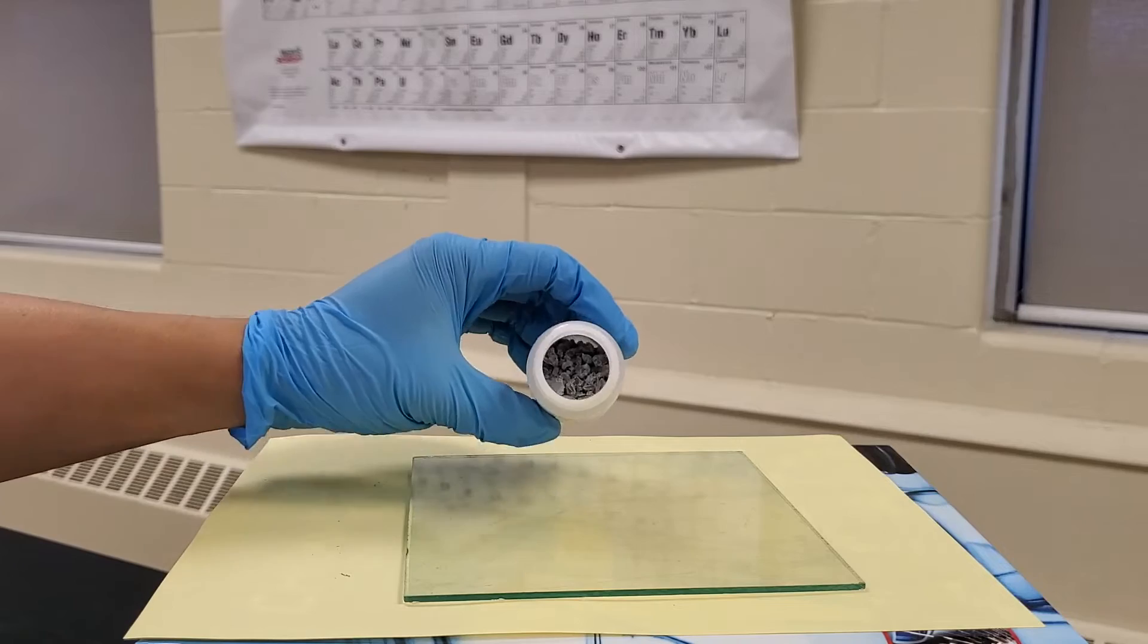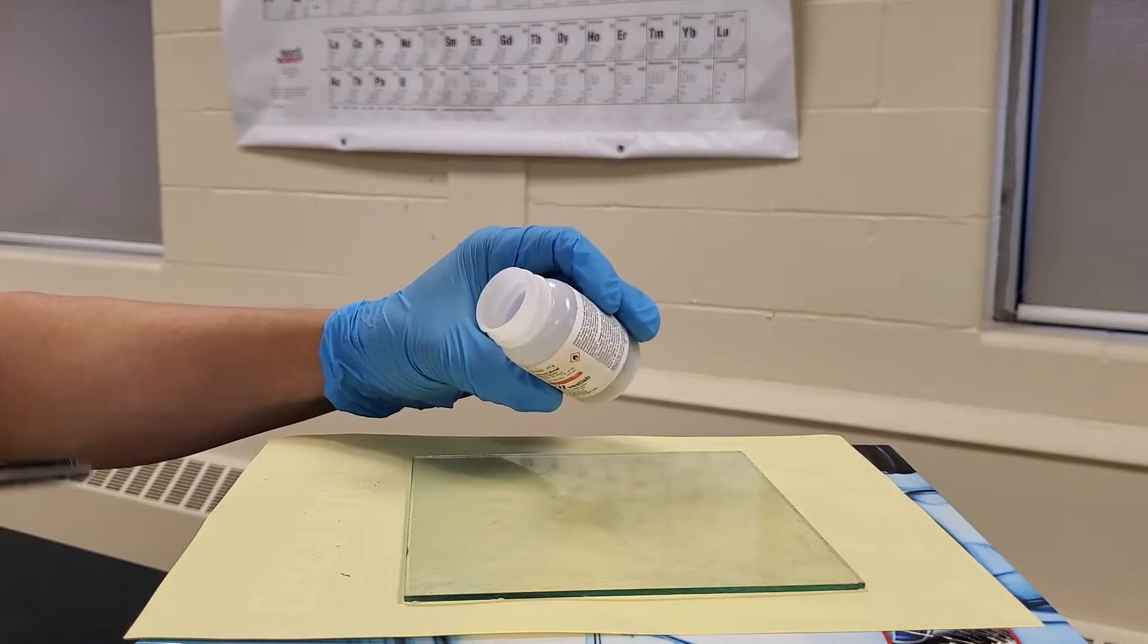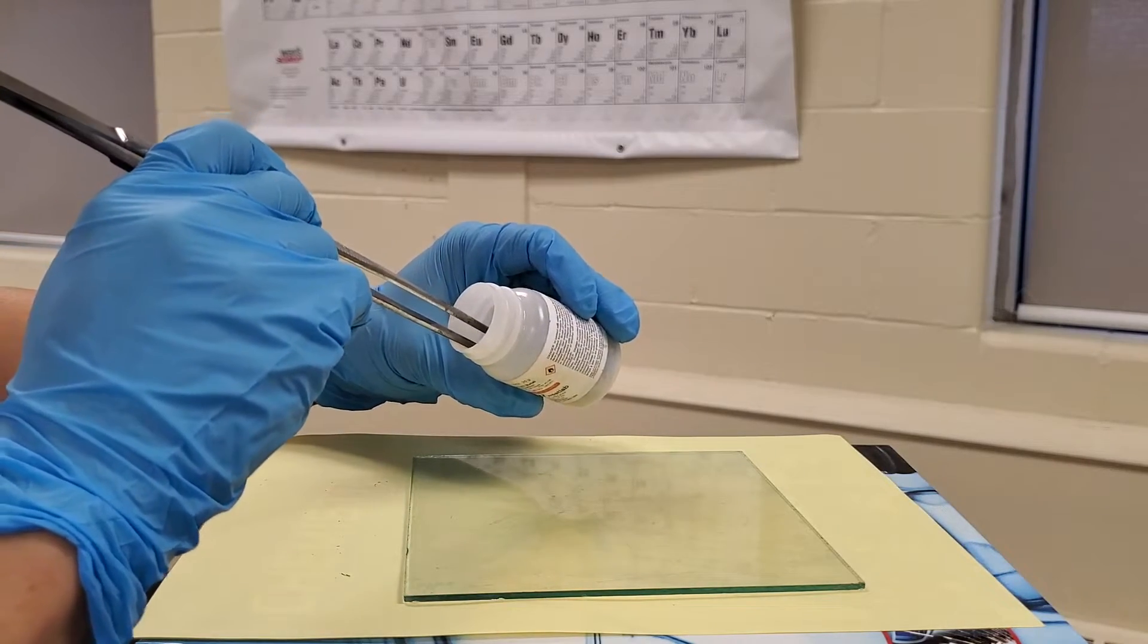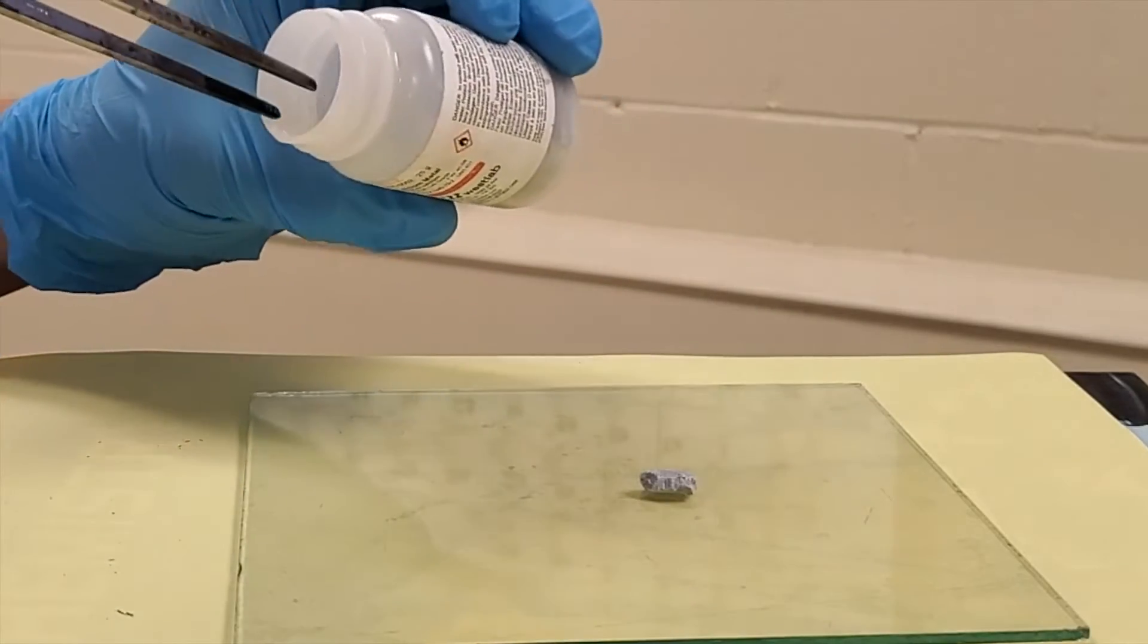This is what calcium looks like. If you weren't paying attention, it would just look like a rock. Gray, dull, and hard.